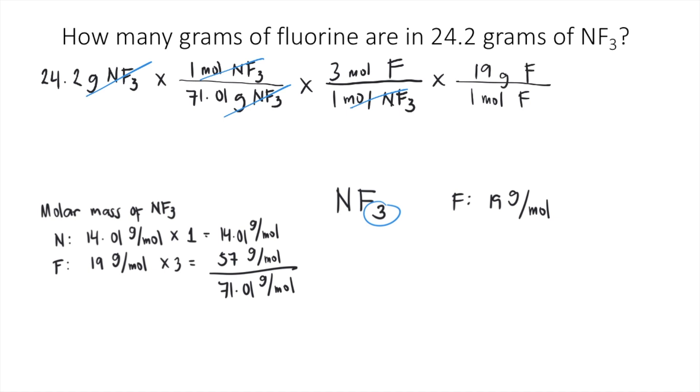So the moles of fluorine cancels out. And finally, we have grams of fluorine as our final unit. So because we already have our final unit, which is grams of fluorine, we can now solve the entire equation.